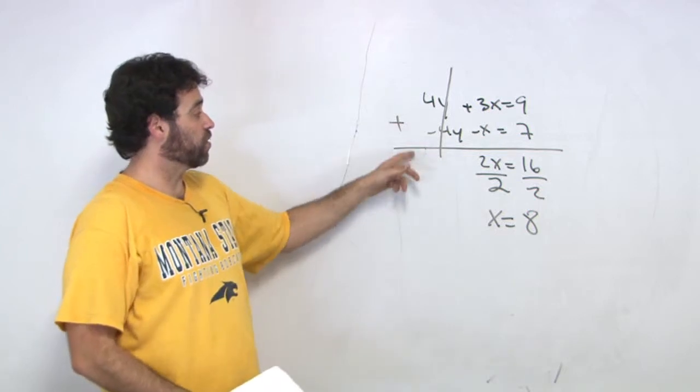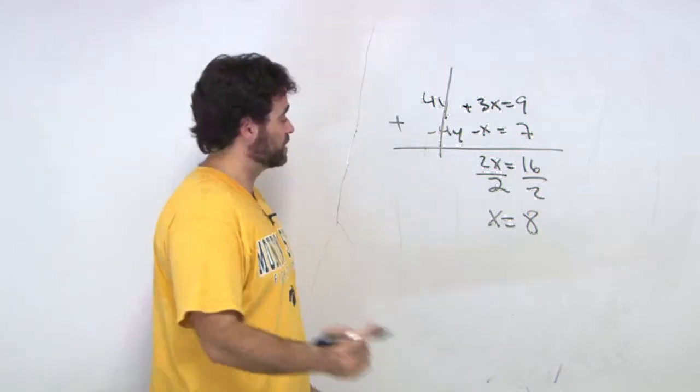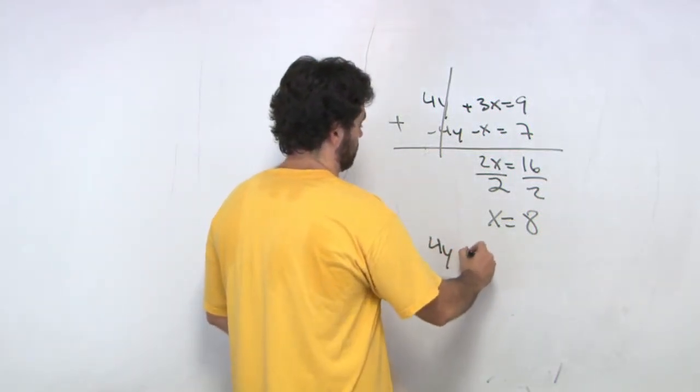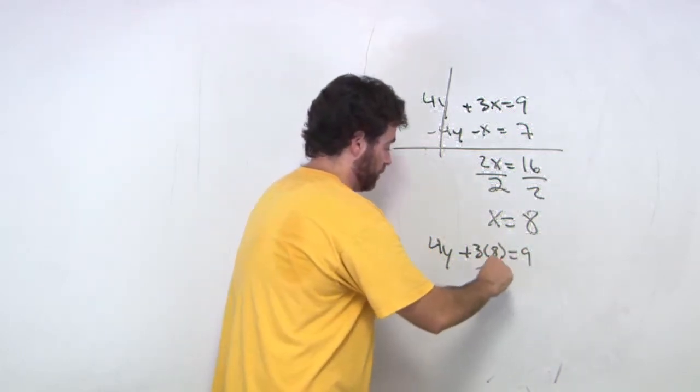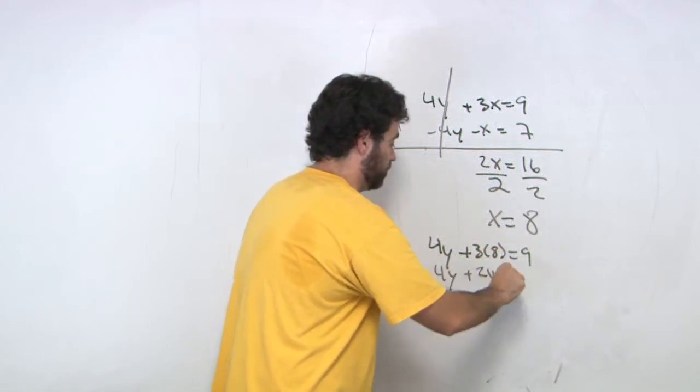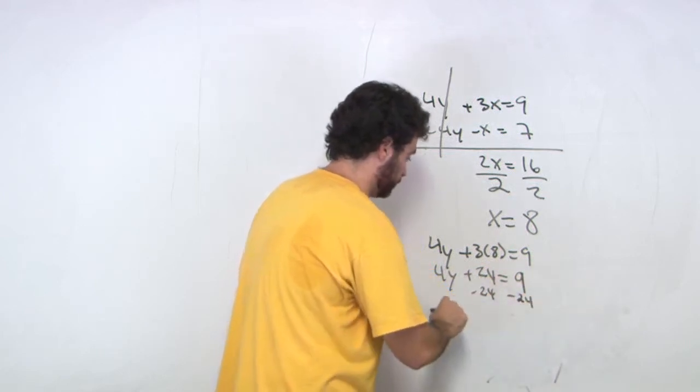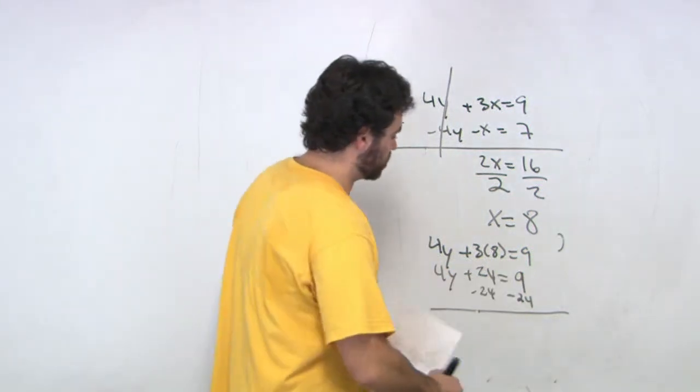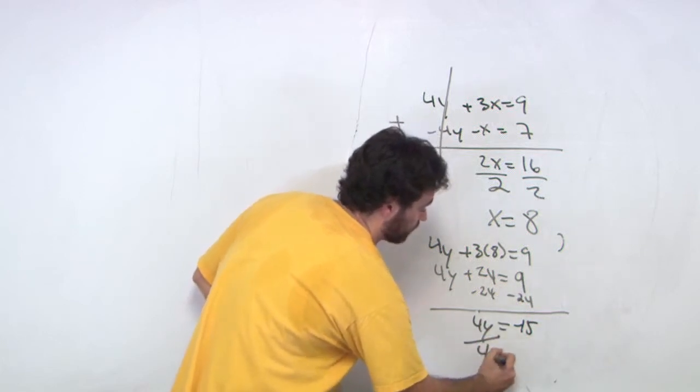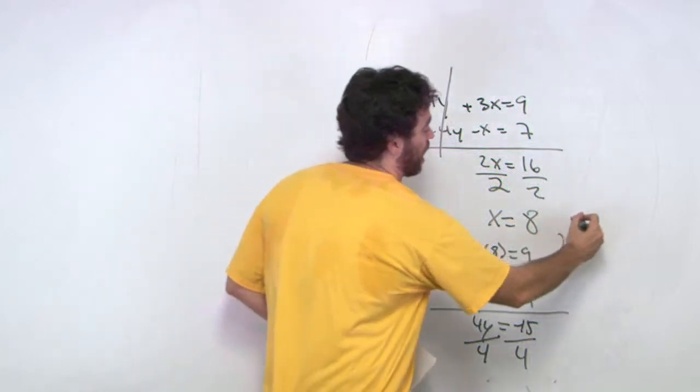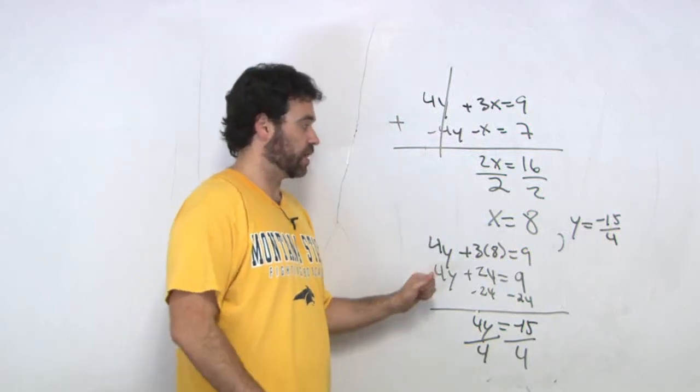Now we want to go and find y. We plug it into one of these. I always like using the positive one, because when you use negative, you can make a mistake. So I say that 4y plus 3 times 8 equals 9. 3 times 8 is 24, and we get 4y plus 24 equals 9. Minus the 24. So we're going to do 9 minus 24 is negative 15. We got 4y equals negative 15. Divide by 4. Therefore, y equals negative 15 over 4. And I leave it to you guys to check to make sure that is the correct answer. And that's good work for you guys.